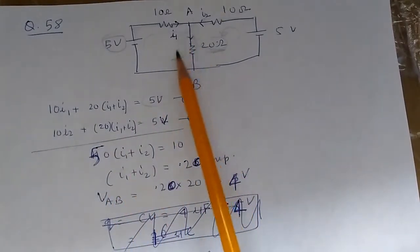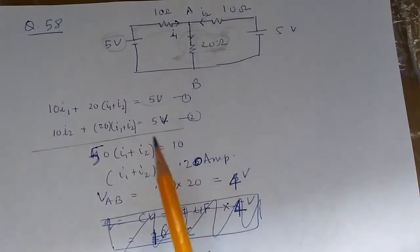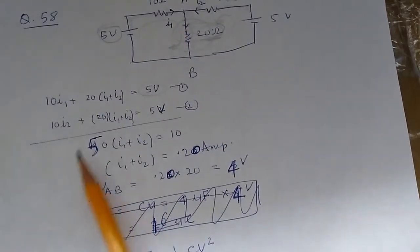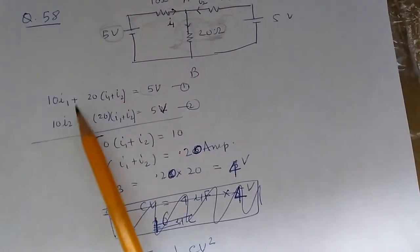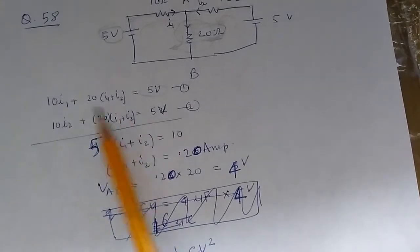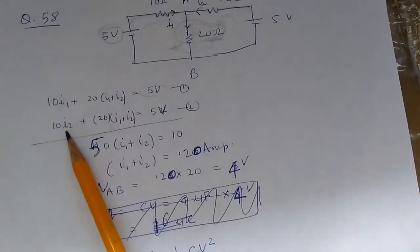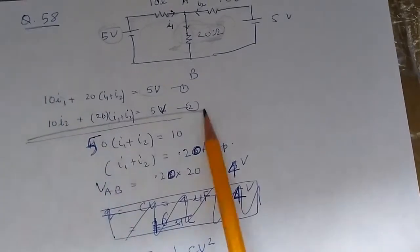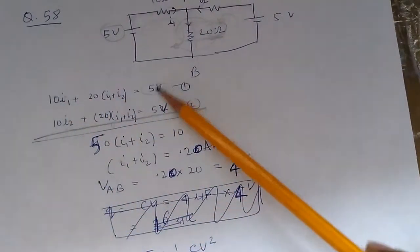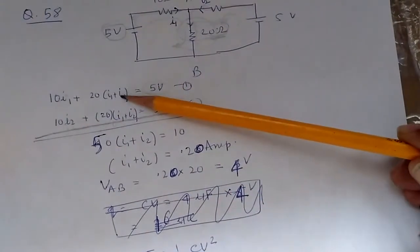Now we need to find the current in this resistor, so we need to solve for I1 plus I2. If you look closely, you get I1 plus I2 in both equations. If you simply add these two equations, you'll get I1 plus I2 directly.